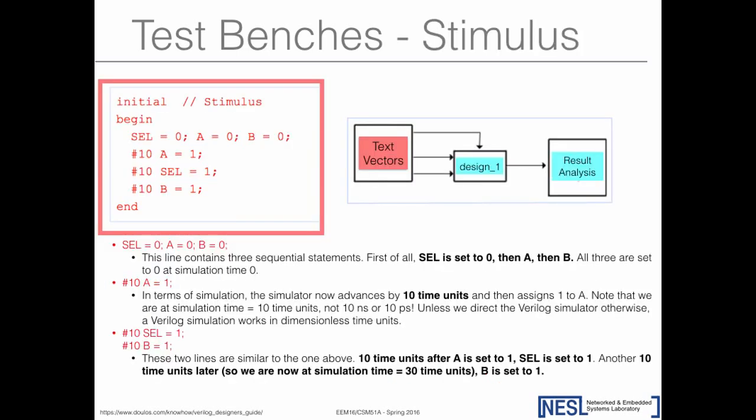In the stimulus, inside initial-begin-end, you force values for the inputs. For example: select=0, A=0, B=0 at the start. Then '#10' means after 10 time units, set A=1. After another 10 time units, set select=1. After another 10 time units, set B=1. You're creating a waveform—values that change over time.